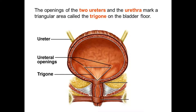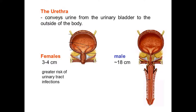The openings of the two ureters and the urethra mark a triangular area called the trigone on the bladder floor. The urethra conveys urine from the urinary bladder to the outside of the body.